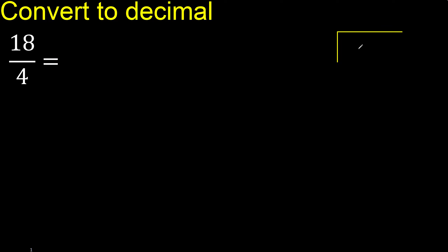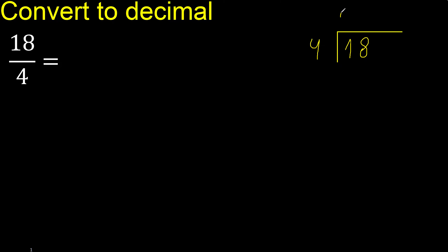18 divided by 4. 1 is less, therefore next digit is 8. 18 is not less, so: 4 multiplied by which number is nearest to 18 but not greater? 4 multiplied by 5 is 20 — that is greater. 4 multiplied by 4 is 16. 16 is not greater, ok?